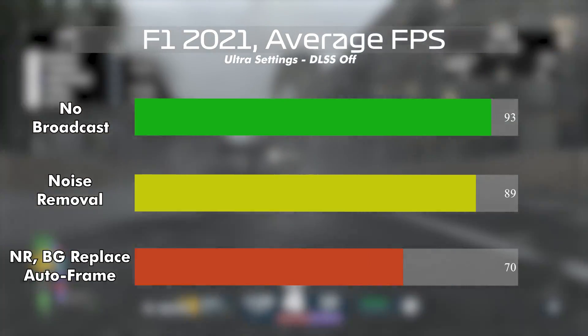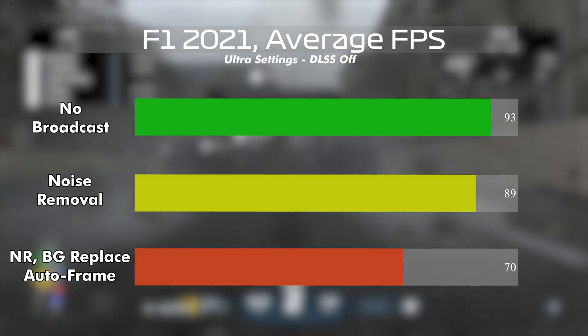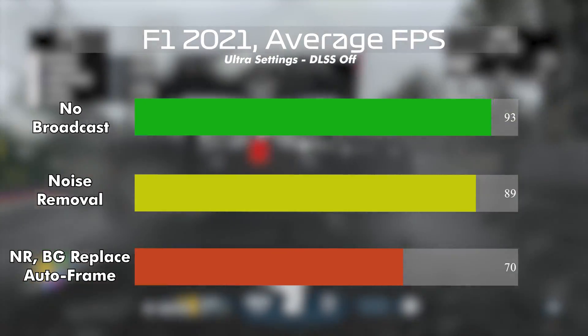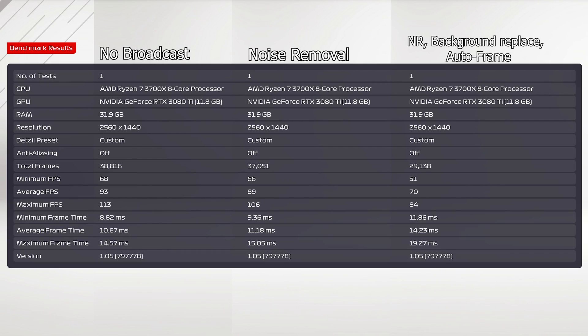I think that's a pretty big deal. If you're going to be using this for streaming, keep that in mind — you might have to turn down the settings on some games depending on what graphics card you have. If you have something like a 2060, it may be a significant issue. I only have the 3080 Ti to test with, so I'm curious whether the impact would be larger on different cards. Looking at the detailed results — minimum FPS, average FPS, maximum FPS, and frame times — all of them are affected, with the worst case being auto-framing, background replacement, and noise removal all enabled simultaneously.